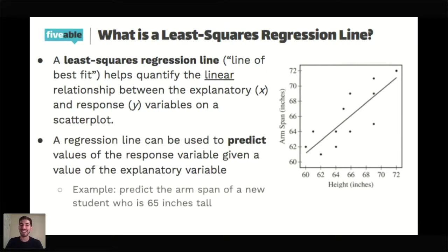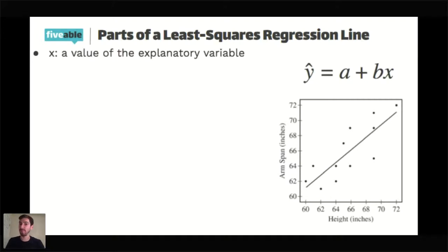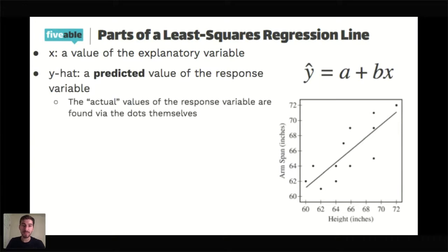In context, that would be like predicting the arm span of a new student who is 65 inches tall. We can do that graphically by lining up where 65 would be on the x-axis, bumping up onto the line, and looking over to see what the response variable would be. Or we could actually use the equation given to us. The equation of a linear regression line looks like this: y-hat equals a plus bx. The little thing on top of y is called a hat. X stands for the explanatory variable — in this case, height. Y-hat stands for the predicted value of a response variable. The actual values of the response variable are the dots themselves — for example, there's a student who is 62 inches tall whose arm span is about 61 inches based on the scatter plot. The prediction will be based on where the line is when x is 62.